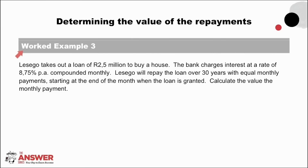In this worked example, we look at what to do if we are asked to calculate the payments — in other words, X's value. Le Sego takes out a loan of R2,500,000 to buy a house. The bank charges interest at 8.75% per annum, compounded monthly. Le Sego will repay the loan over 30 years with equal monthly payments, starting at the end of the month when the loan is granted. Calculate the value of the monthly payment. Pause the video to give this question a go.